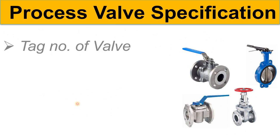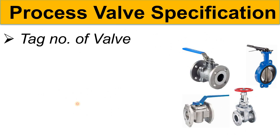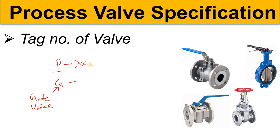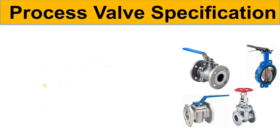The next information given is the tag number of the valve. This is important because, for example, 'P' denotes a plug valve, so when someone sees 'P' in the P&ID they can relate it to a plug valve. 'G' means gate valve. These designations are defined in the Process Valve Specification sheet. There could also be numeric values that give information about the body MOC, internal body MOC, and rating. So the tag number of the valve is also very important.